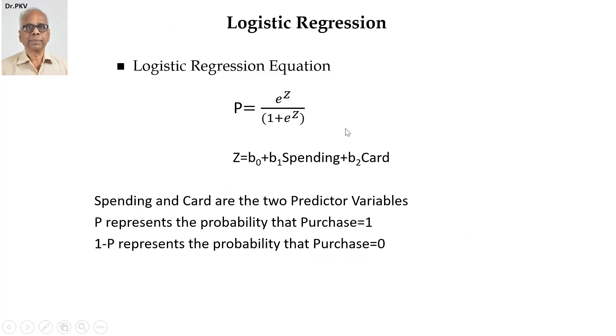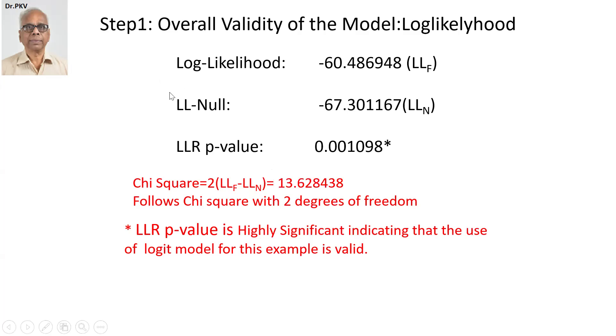In other words, z is equal to b0, only the intercept. Then, the log likelihood value running the Python script is minus 67.301167, which is LLN, which is called log likelihood null model.